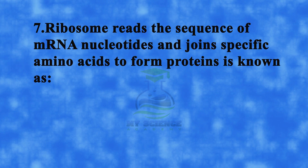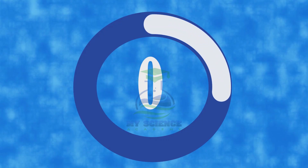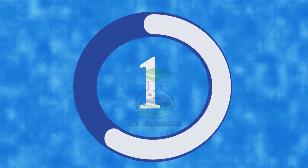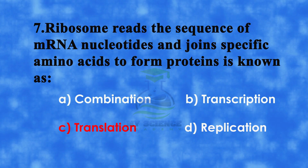Question 7: Ribosomes read the sequence of messenger RNA nucleotides and join specific amino acids to form protein — this is known as A. Combination, B. Transcription, C. Translation, or D. Replication. Correct answer is C. Translation.